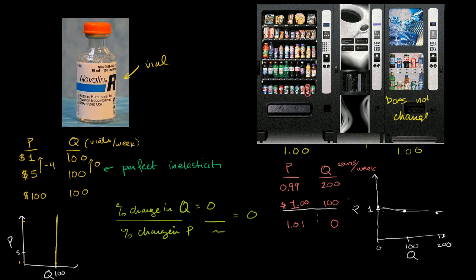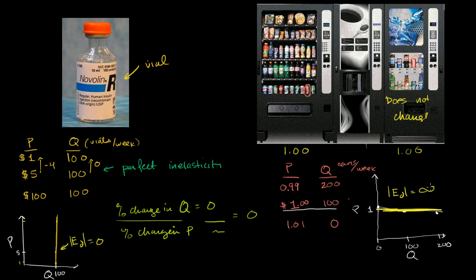I encourage you to work out the math — you will get a very large number for elasticity. Something approaching perfect elasticity — a truly perfect elasticity — would be a horizontal line. So over here, the absolute value of our elasticity of demand is zero. And over here, the absolute value of our elasticity of demand is infinity.